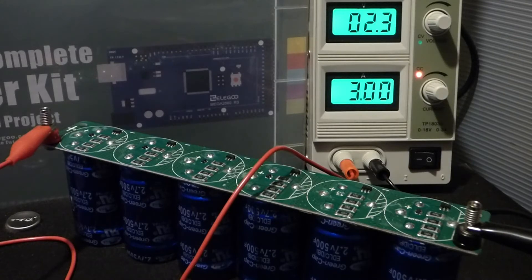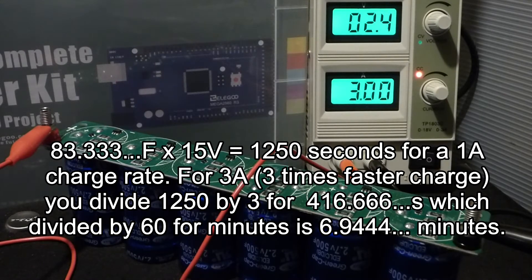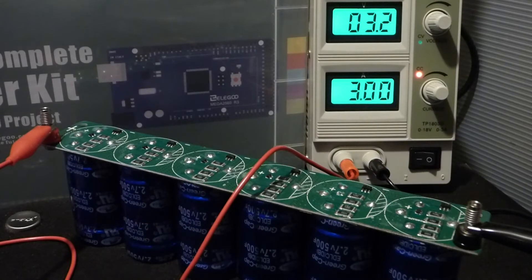According to my calculations it should take about seven minutes to get up to 16 volts. Right now we got three amps of current going into it and we're closing in at about 30 seconds. The voltage is going up quicker than we would like.